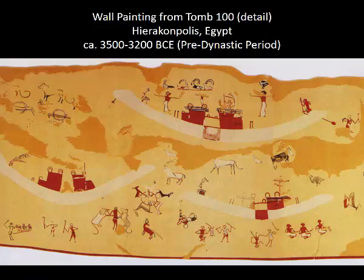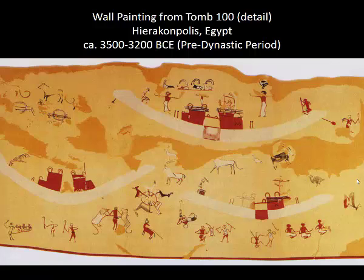Boats factor in quite significantly to Egyptian beliefs about burial rituals and the afterlife. For the upper classes, particularly the Pharaoh, when the Pharaoh passed away, they would load funerary objects onto boats — things needed for the burial ritual and objects the Pharaoh would take into the afterlife. These boats were ceremoniously sailed down the Nile and transported to the front of the burial structure, at least through the end of the Old Kingdom period.